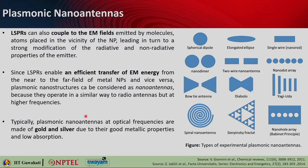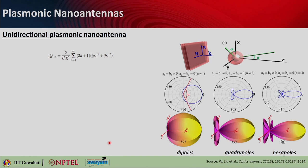The material difference is that nano antennas operating at optical frequencies use gold and silver because of their good metallic properties and low absorption in this frequency range. Here is an example of plasmonic nano antennas designed for unidirectional scattering.